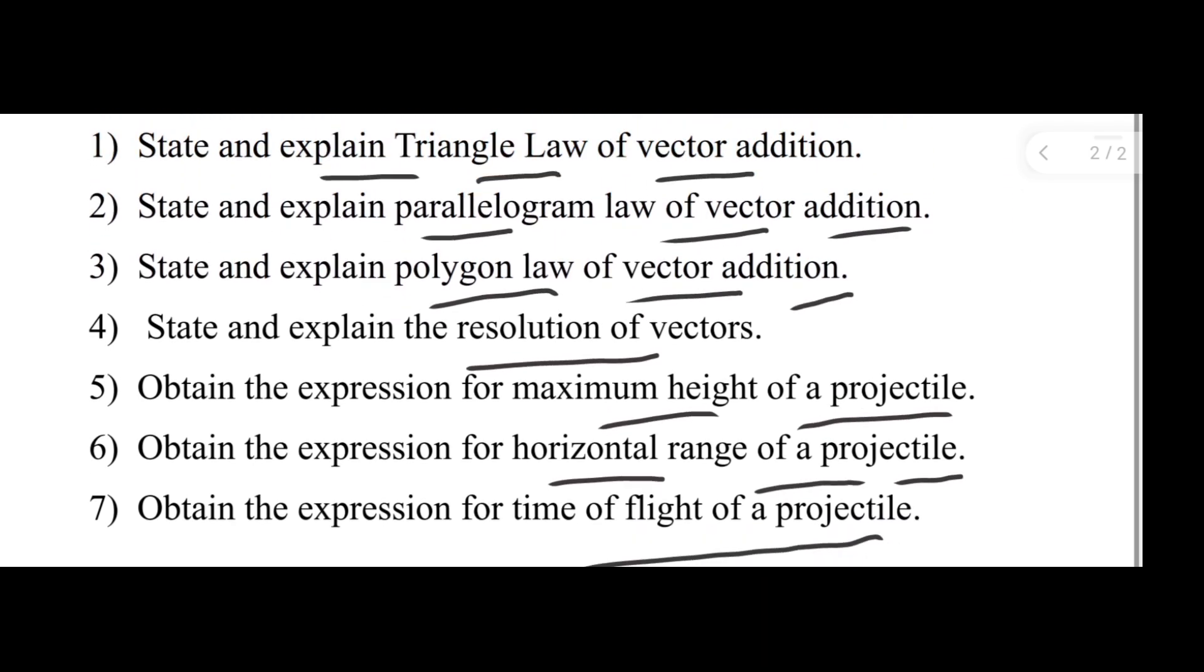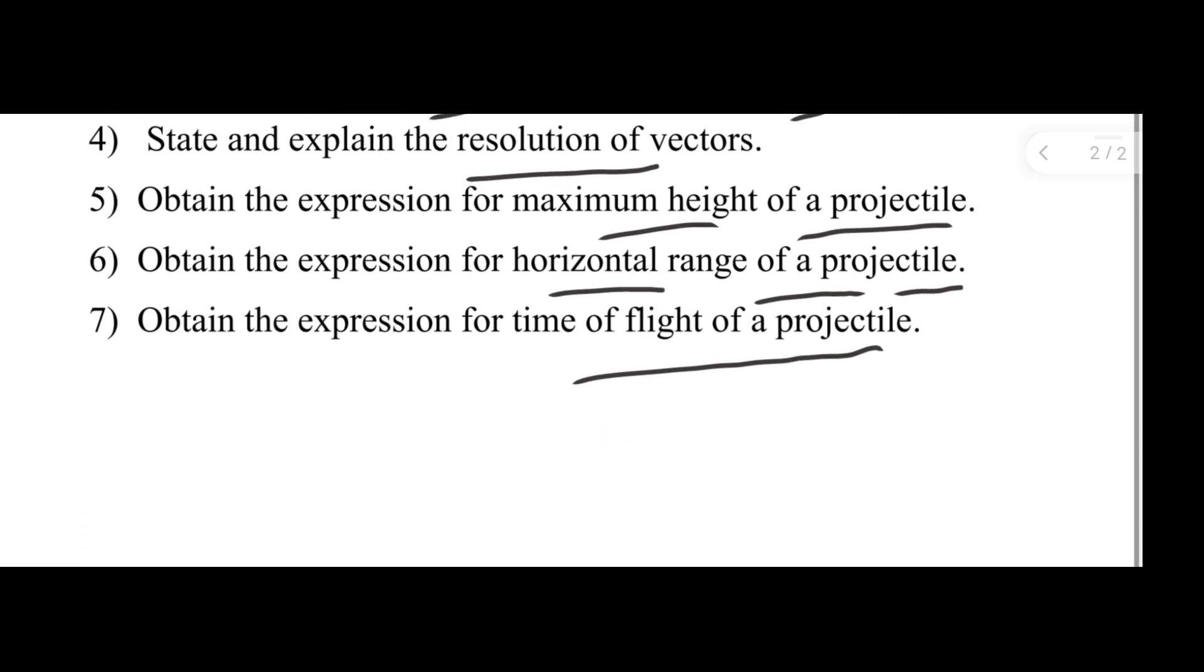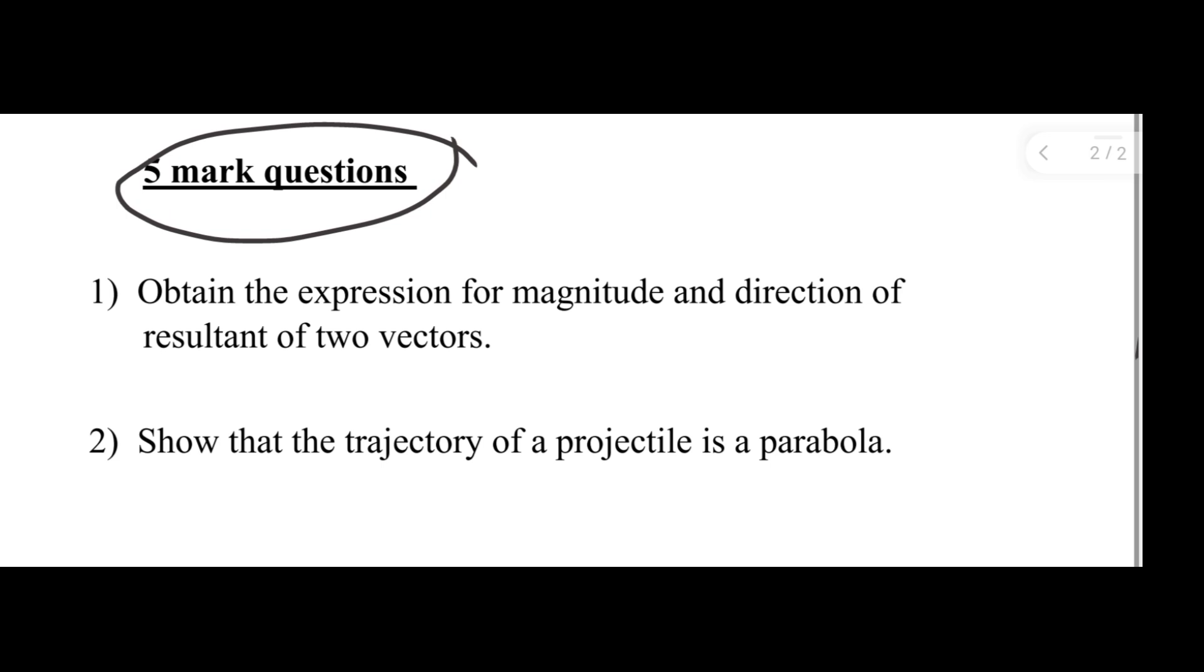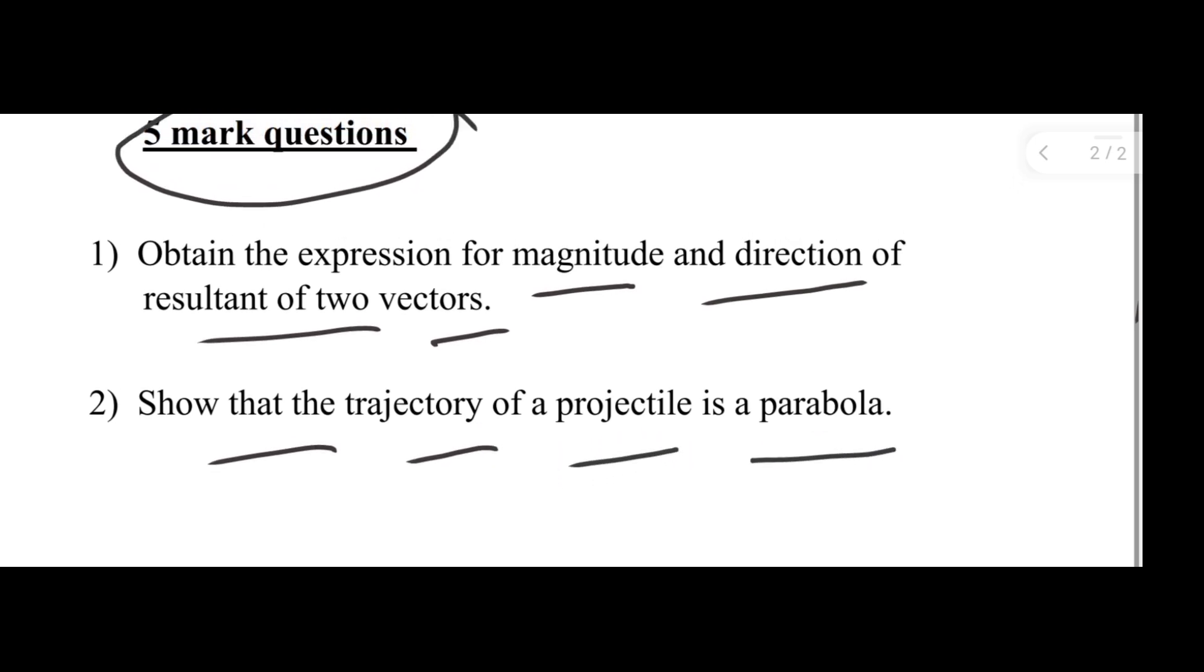Next I will discuss five mark type questions. In that, first one is obtain the expression for magnitude and direction of the resultant of two vectors. Then show that the trajectory of a projectile is a parabola. These two are the important five mark type questions.